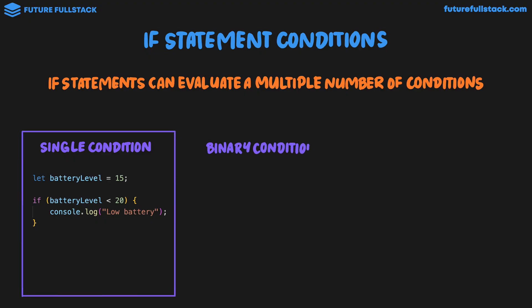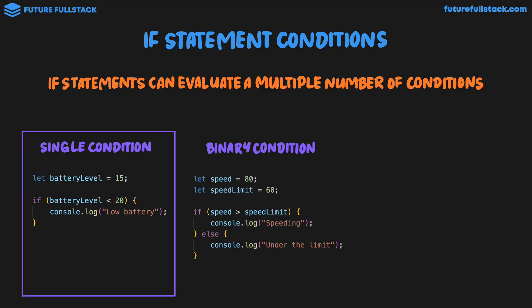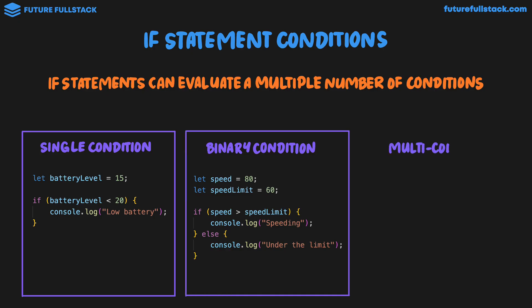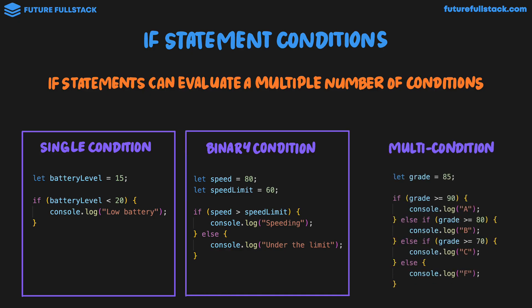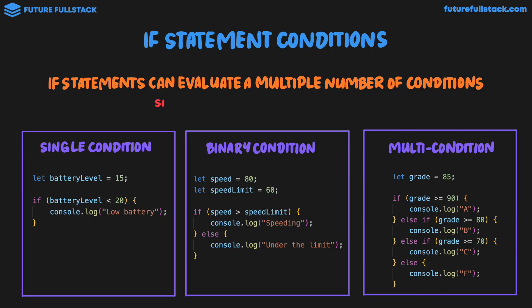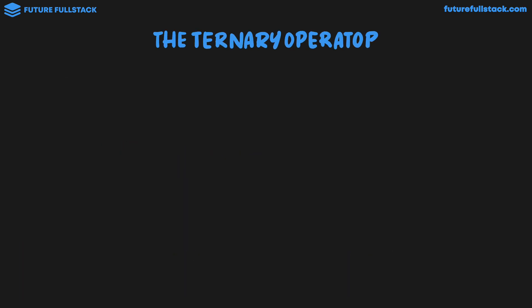We can have a binary condition, which looks like this, where we have an if and else statement, where the outcome is binary — either they're speeding or they're under the limit, meaning there's one of two possible outcomes. We can also have multi-conditions, like in this example, where we have a series of if, else if, and else statements. Now there exists a special operator for binary conditions — this middle case — and this is called the ternary operator.